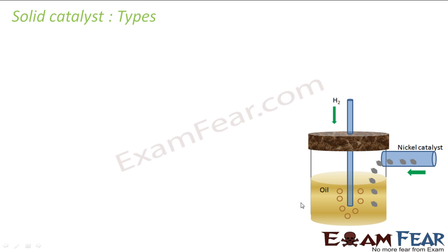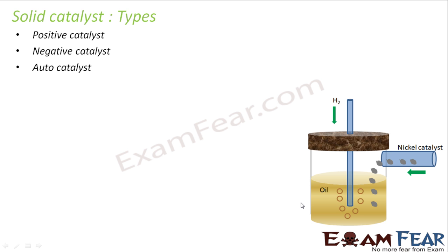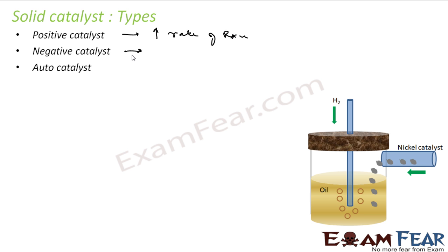If we talk about the catalyst type, there are three types of catalysts: positive catalyst, negative catalyst, and autocatalyst. A positive catalyst is something which increases the rate of reaction — for example, this nickel catalyst in hydrogenation increases the rate of reaction.